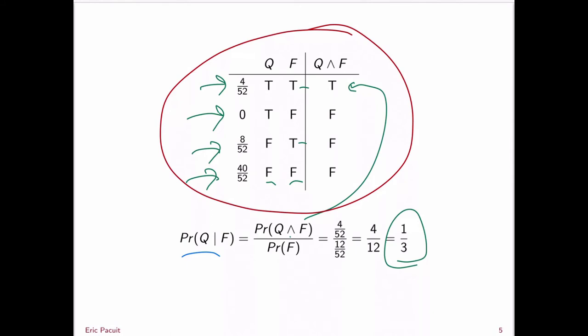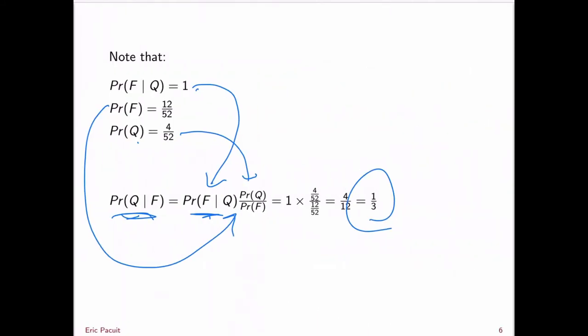So there are two ways to calculate the probability of Q given F: one using Bayes' theorem, the other using a stochastic truth table. The stochastic truth table approach was manageable here because there were only two atomic propositions and four rows. In general, with many possibilities, determining the probabilities for each row can be quite difficult, whereas we will often have direct access to quantities like the probability of F, the probability of Q, and the probability of F given Q.